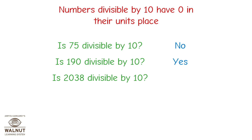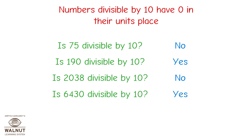Is 2038 divisible by 10? What is the number in the units place? It is 8. This number is not divisible by 10. Is 6430 divisible by 10? What is the number in the unit's place? It is 0. This number is divisible by 10. Is 1982 divisible by 10? What is the number in the unit's place? It is 2. This number is not divisible by 10.